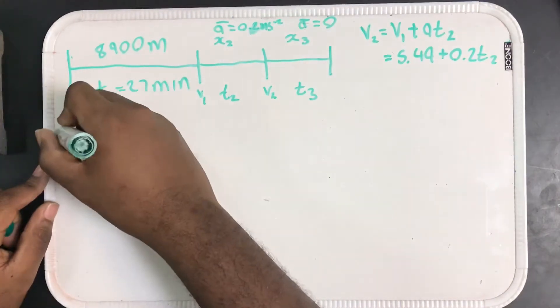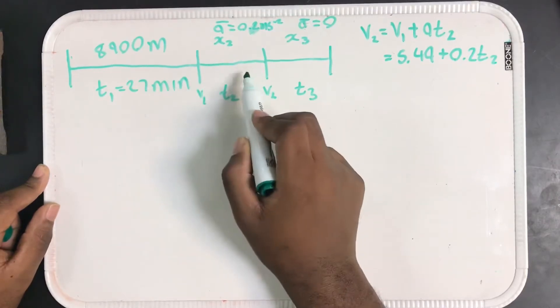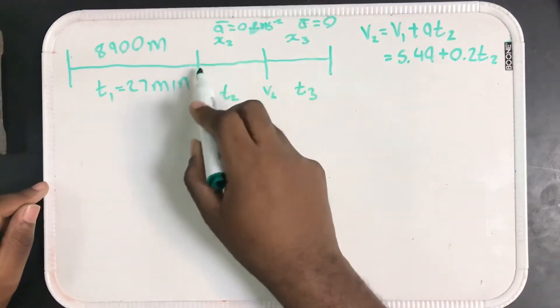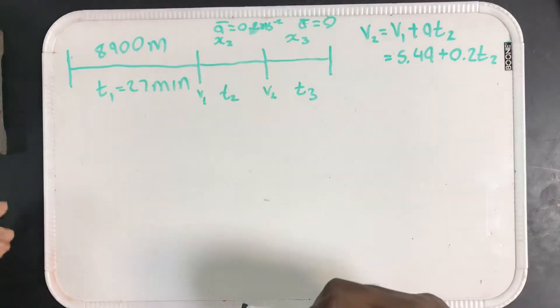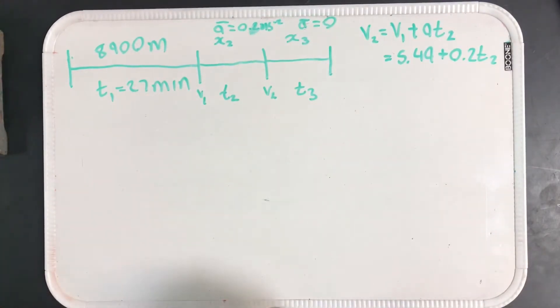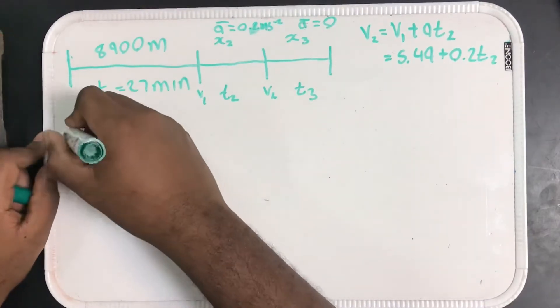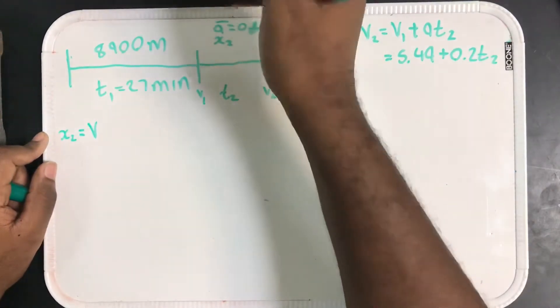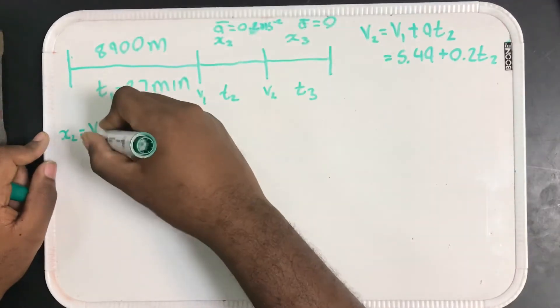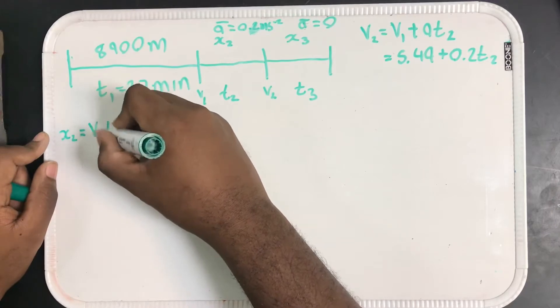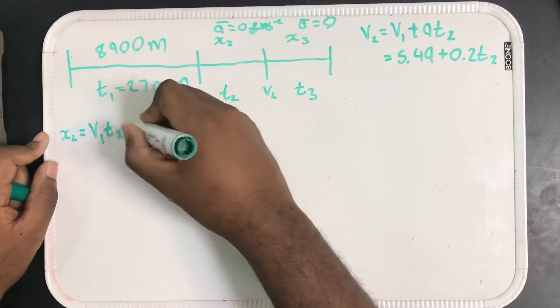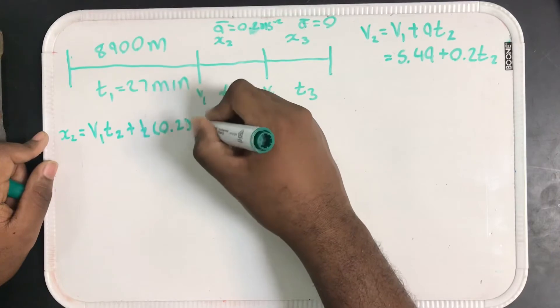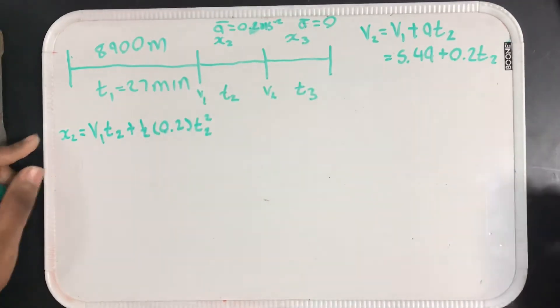First, I know X2, the distance traveled in this bit right here. It's not going to be distance equals speed times time because I have an acceleration here, and we understand what we use when we have motion that undergoes uniform acceleration. We can write that X2 equals its initial velocity V1 times the time the journey took T2, plus one half the acceleration 0.2 times T2 squared.